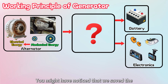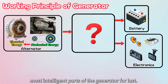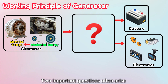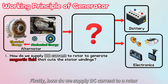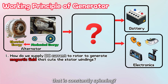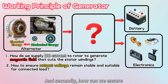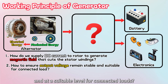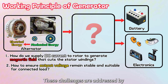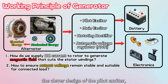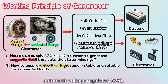Two important questions often arise when discussing generator operation. First, how do we supply DC current to a rotor that is constantly spinning? And second, how can we ensure the output voltage remains stable and at a suitable level for connected loads? These challenges are addressed by the clever design of the pilot exciter, main exciter, rotating rectifier, and automatic voltage regulator, or AVR.